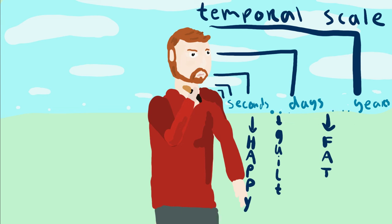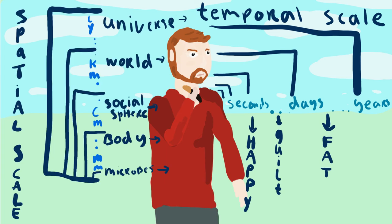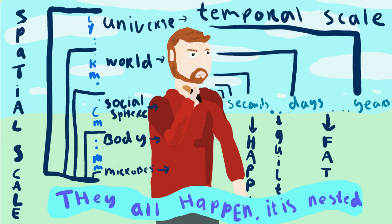But also on the spatial scales there are effects. So it has effects on the microbes, on your body, on the social sphere - what your friends say about it - and on the world, where it's produced and what are the effects of the plastic. So although you think about these different scales, they all happen and it's all nested at the same time. Eating a snack has both the short term and long term effects in time and in space.